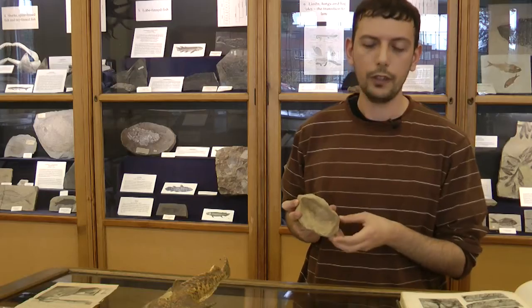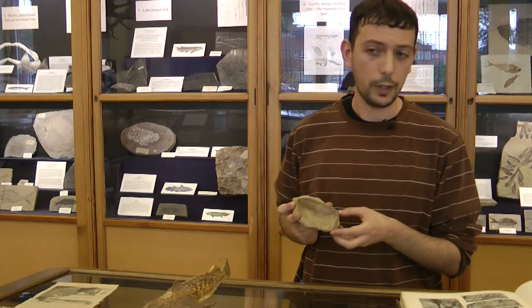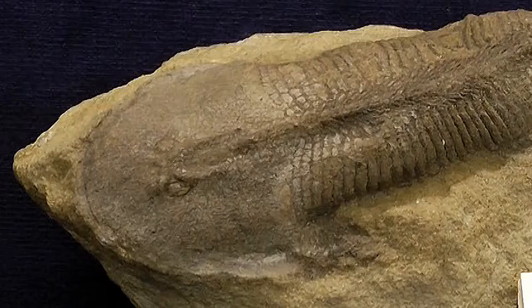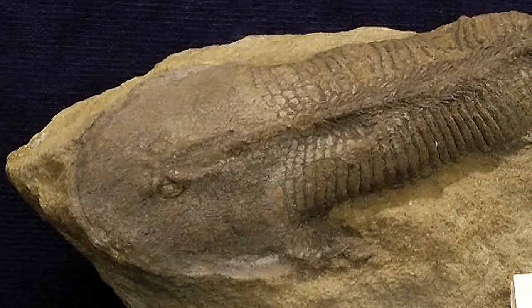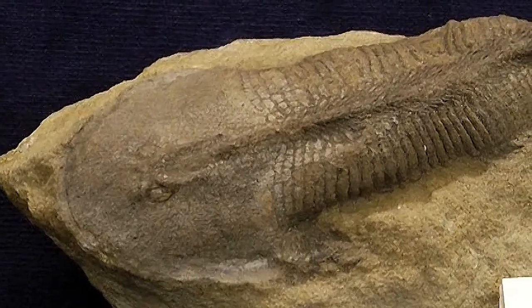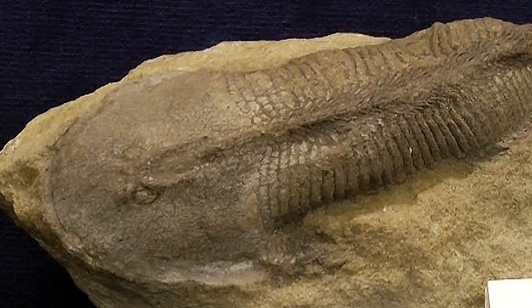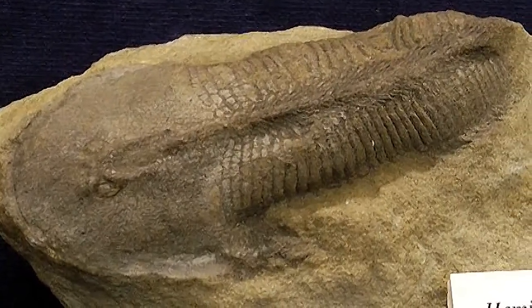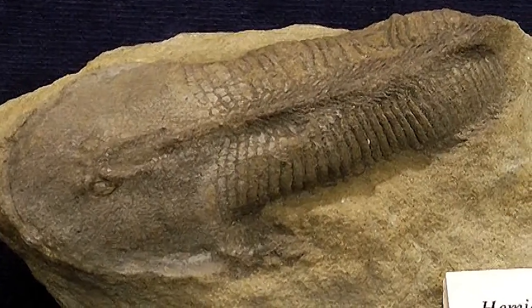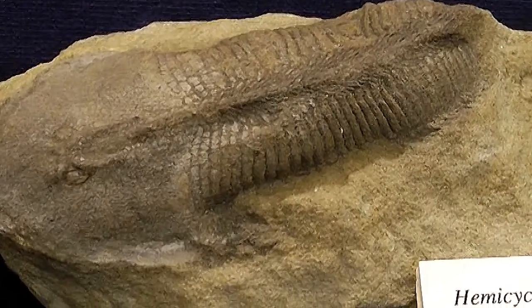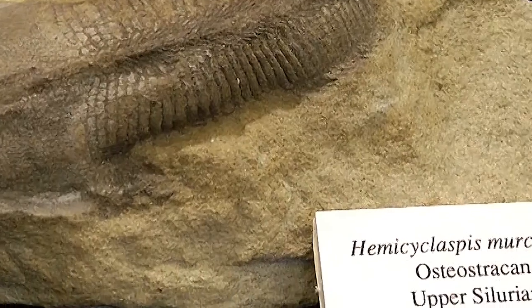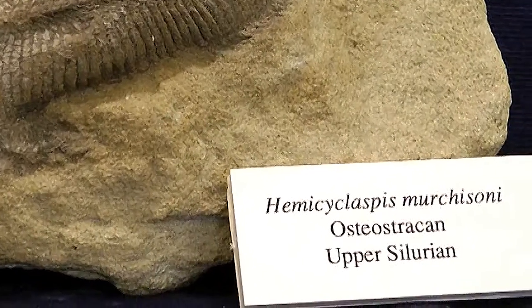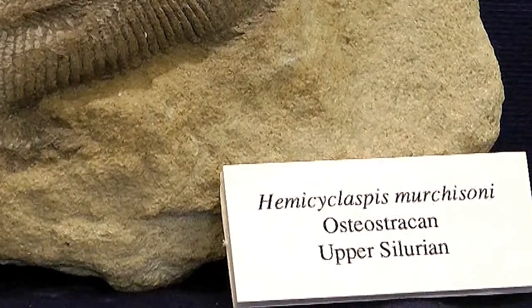This specimen was donated to the museum in 1974. It comes from the Cornell sandstone, which had been dated at that time as Carboniferous, but after the discovery of this specimen, we now know that the age of this rock formation is Pridolian.